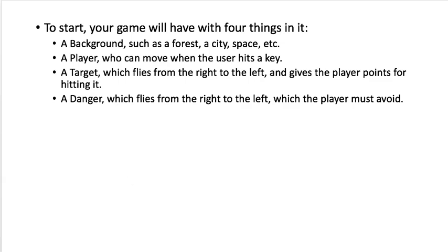You'll need to have four things. A background, so it could be a forest, city, space, Japan, a castle, whatever you want the background to be. A player - a person, an animal, a vegetable, whatever your main player is going to be that's going to move when you hit the key. A target, which in the Ninja Cat case was the ruby, which flies from right to left and you get points for hitting it. And a danger, which was the dog in Ninja Cat, which is going to come from right to left, just like the dog did, and which you must avoid.